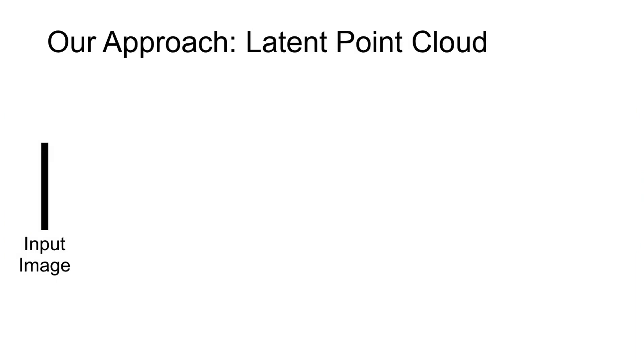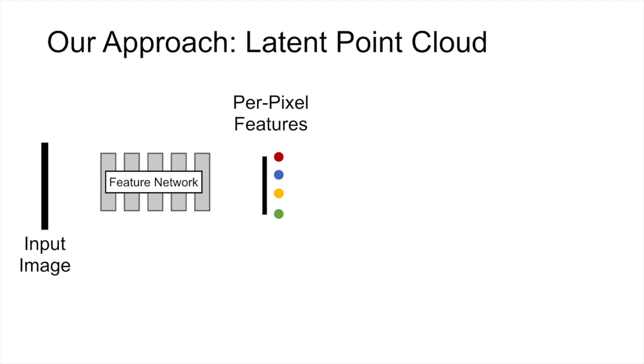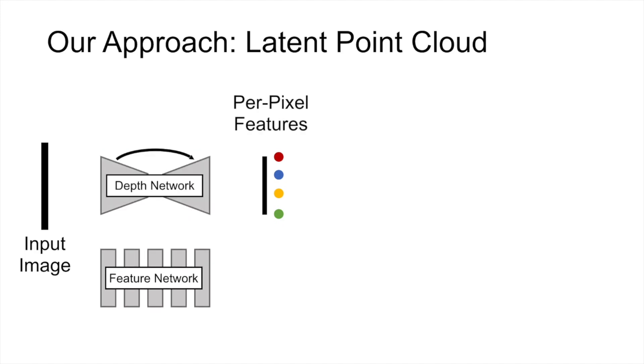To solve this problem, we use a latent point cloud representation. Given an image, we pass it through a network to obtain features at each pixel location. We also predict the depth at each location, which is used to create a point cloud of features. This is our latent point cloud representation.